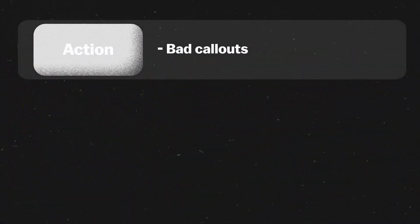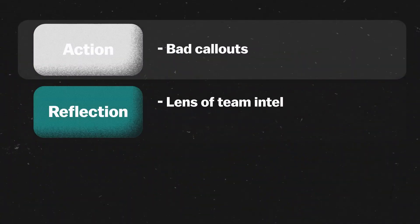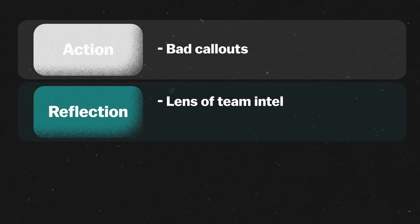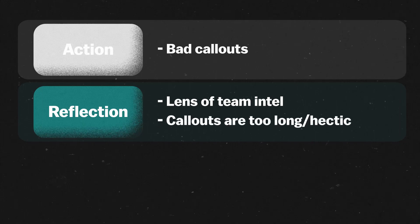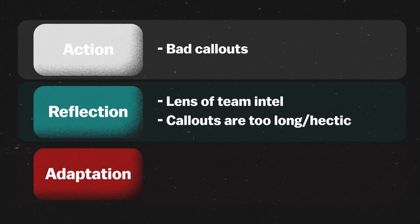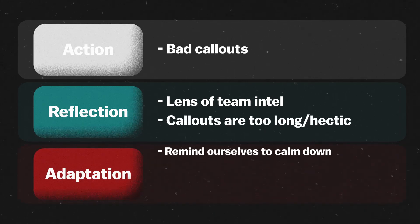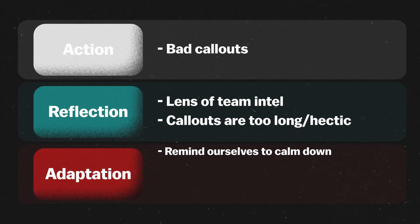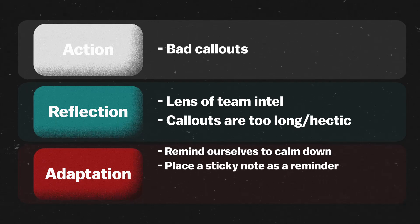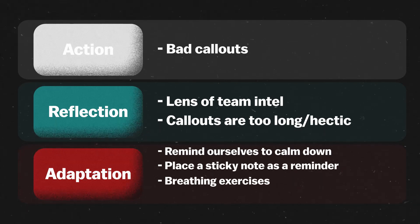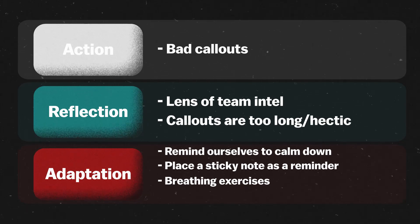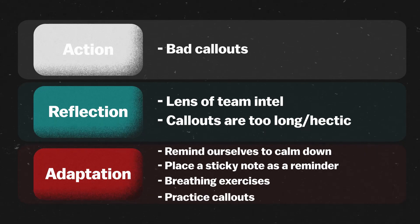Issue 1: giving bad or convoluted callouts. Through the lens of team intel, we can say that our callouts are too long or too hectic. We decide to be cognizant of this issue by reminding ourselves to calm down during hectic rounds. We may place a sticky note on our monitor as an external reminder, we may introduce breathing exercises before games, or simply practice short and snappy callouts for a couple minutes each day.